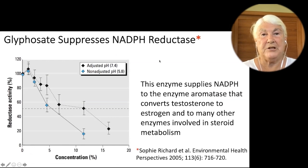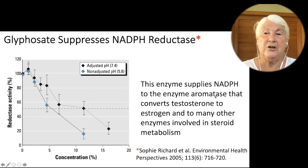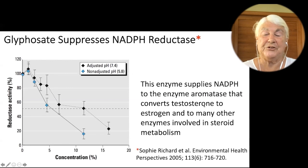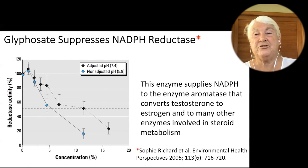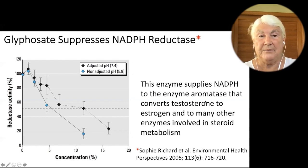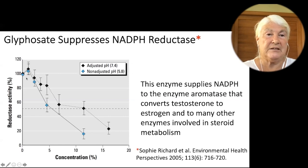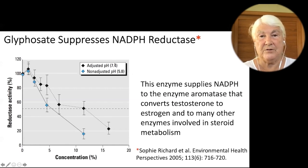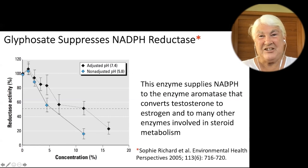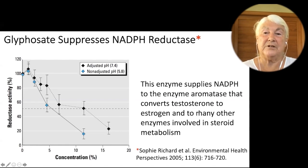Another paper shows that glyphosate suppresses NADPH reductase, which is a problem for getting back the healthy, non-deuterium hydrogen. This enzyme supplies NADPH to aromatase, an important enzyme that converts testosterone to estrogen. Aromatase deficiency is connected to autism — a sort of super-male brain with too much testosterone and not enough estrogen because this enzyme is being disrupted by glyphosate. The reductase activity drops significantly with increasing glyphosate concentration. NADPH reductase is necessary not only for aromatase, but for all the cytochrome P450 enzymes involved in many different reactions.